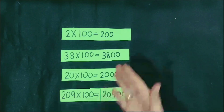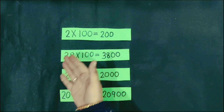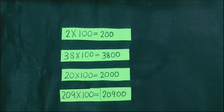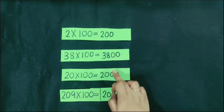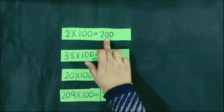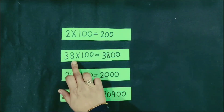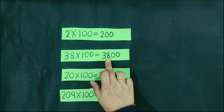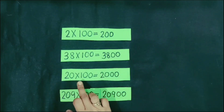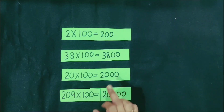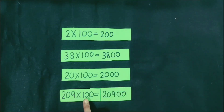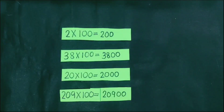Let's see another pattern related to numbers. In this pattern, numbers are multiplied by 100. For the first example, 2 multiplied by 100, and in the answer, 00 is at the end of 2. In this pattern, we observe that when a number is multiplied by 100, we put 00 at the end of the given number.